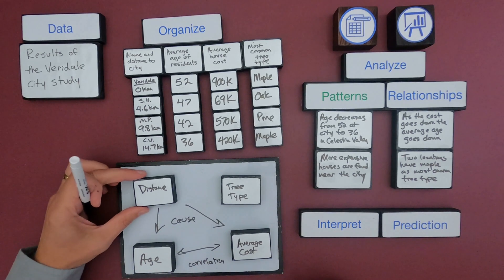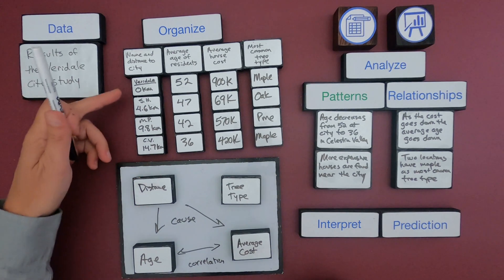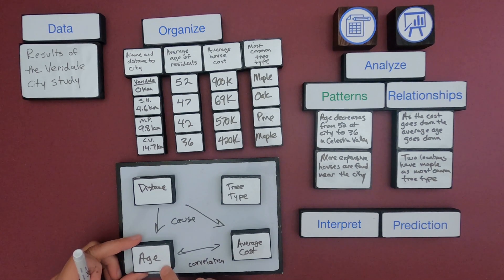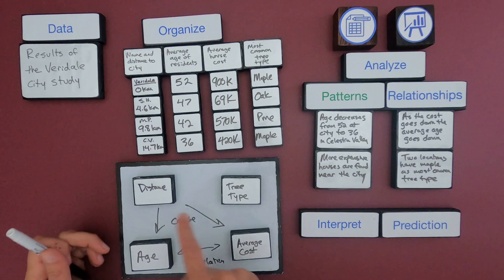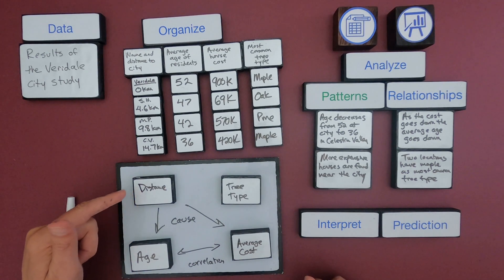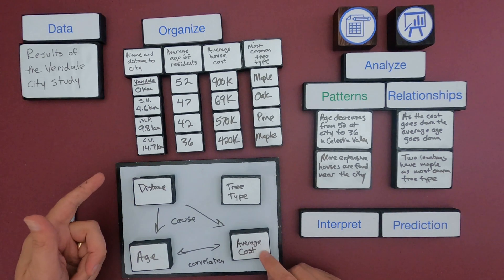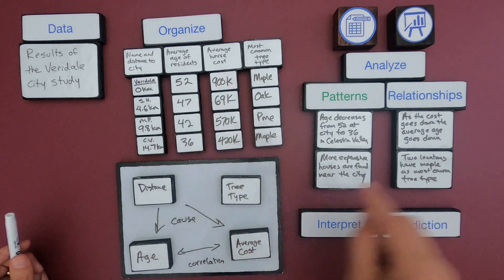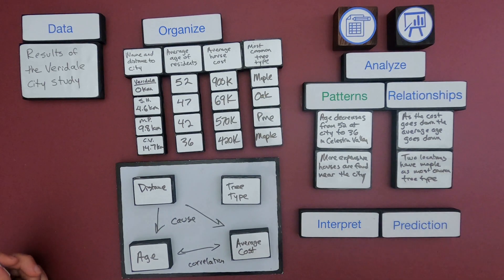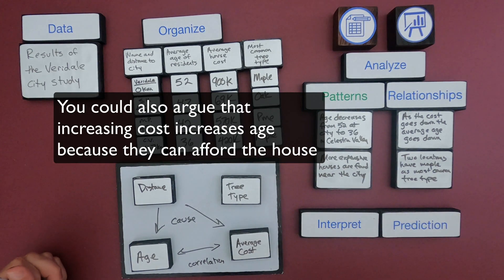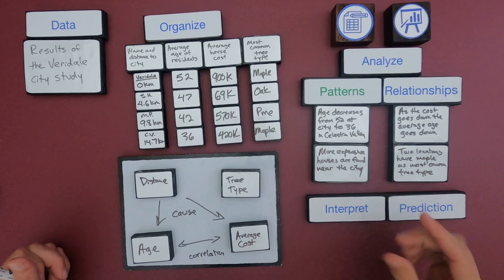The relationship I wrote is: changing the distance from the city causes a change in age — the farther away, the younger the people are — and as you move farther away, the cost goes down as well. I drew the arrow in that direction because I don't think changing your age changes your distance, or changing your cost changes your distance. There's also a correlation: as the cost goes down, the average age goes down.